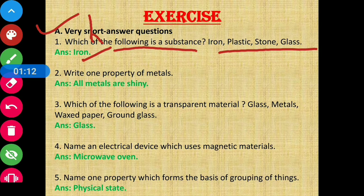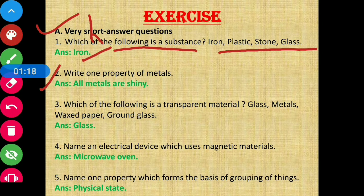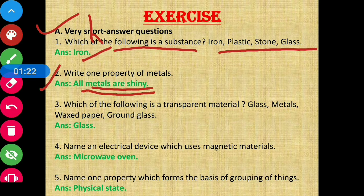Question number 2: Write one property of metals. The answer is: all metals are shiny.